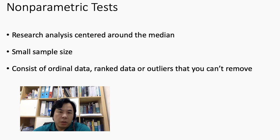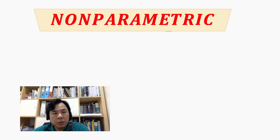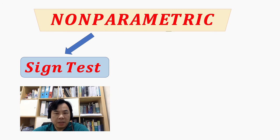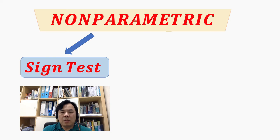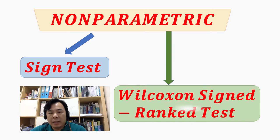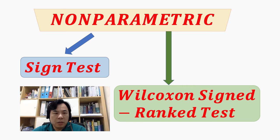Now we are ready to look at the tools available under non-parametric tests. The first two tests are: first, the sign test — from the name itself, you assign plus or minus signs to carry out the test. The second one is known as the Wilcoxon signed rank test, which involves assigning plus or minus signs and also performing a ranking procedure on the data observations.